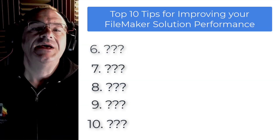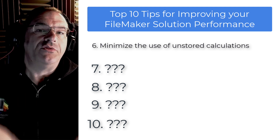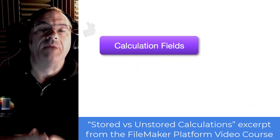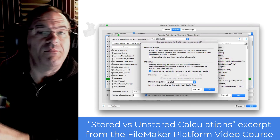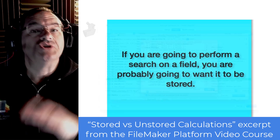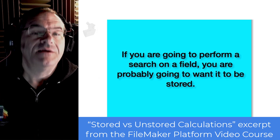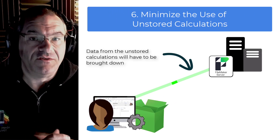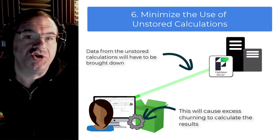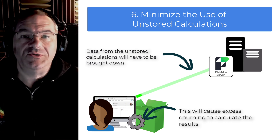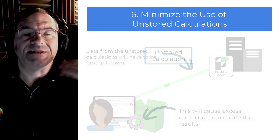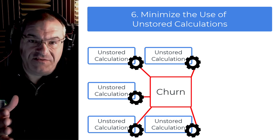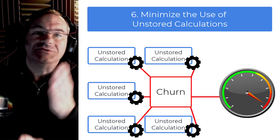Another area to minimize is the use of unstored calculations. There are times where you can use a stored calculation, which gives you certain performance benefits, but many times you cannot or should not. As the FileMaker data comes down from the server, if you have a lot of unstored calculations on the screen, your local FileMaker client has to churn that data to generate the results you need to see on the layout. Putting lots of unstored calculations results in higher levels of churn, and that becomes a noticeable delay for the user.